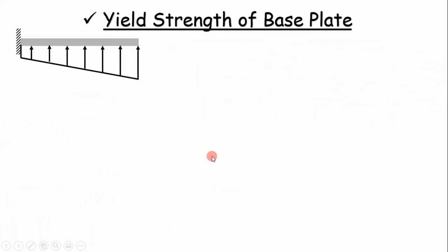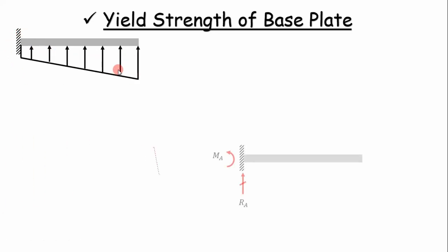The next thing is to calculate your worst case stresses. Looking at this cantilever beam model, it's made up of a uniform load and a triangular load, so you apply superposition and calculate your worst case stresses. On a cantilever beam, your worst case is going to be at the base, so you want to calculate your reaction at A and your bending moment at A.